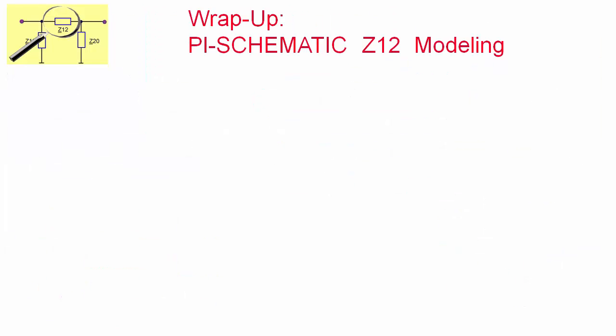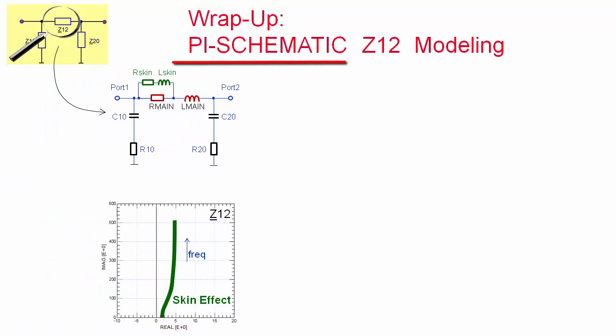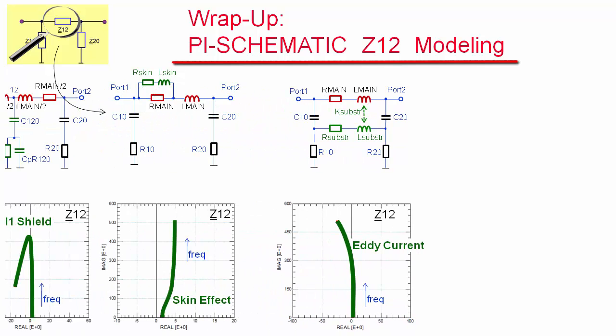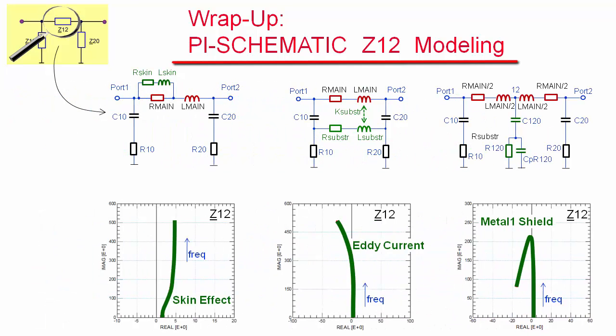This ends my general model development tutorial. In summary, the trajectory of the pi schematic's Z12 impedance gives important information about the SPICE modeling of inductors: the skin effect, the eddy current coupling into the substrate, and the coupling to the metal one shield.